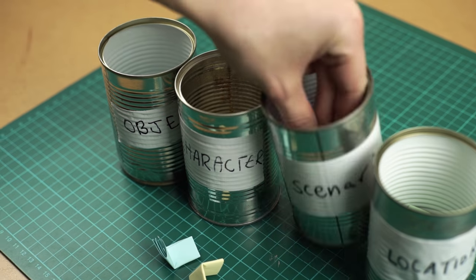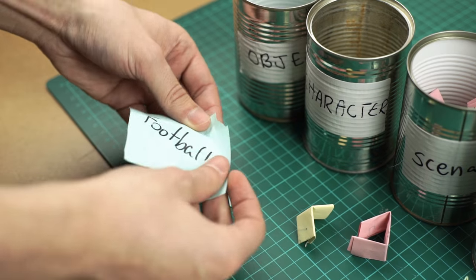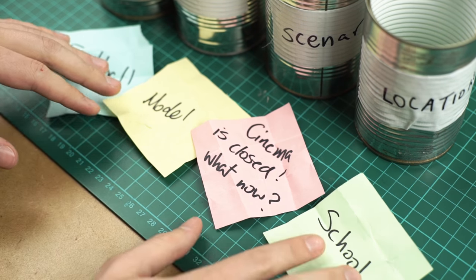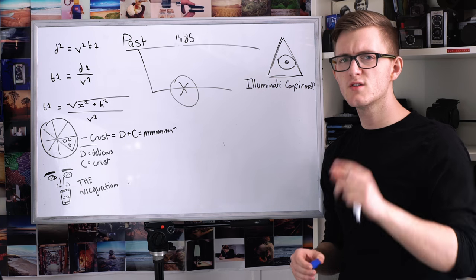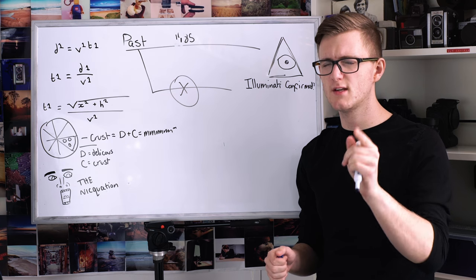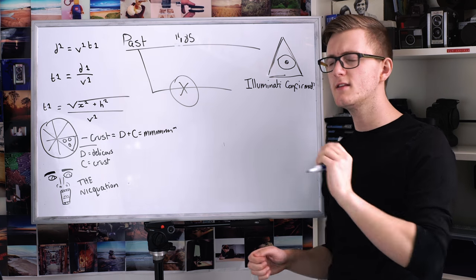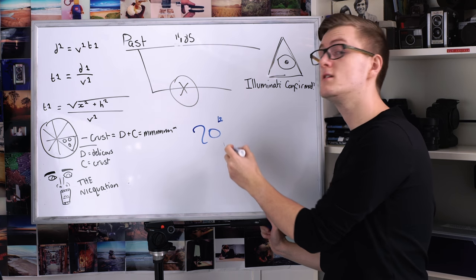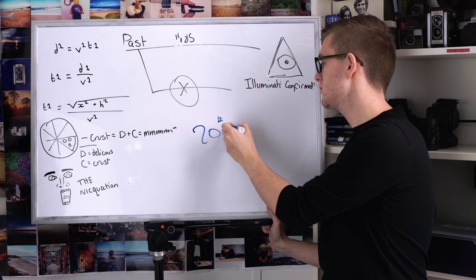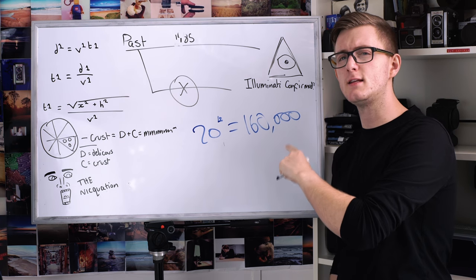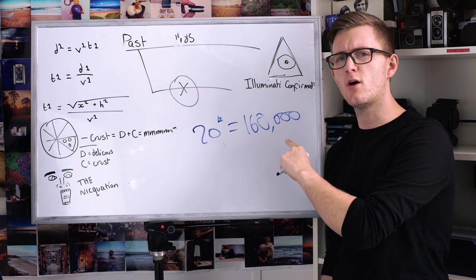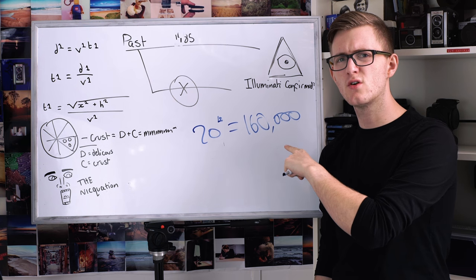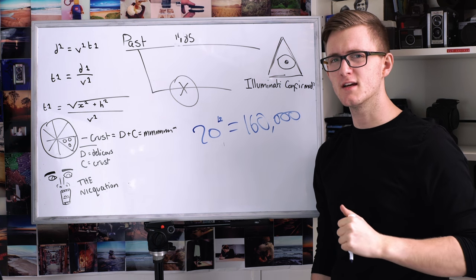Then it's a case of picking out one bit of paper from each can and creating a storyline using each category. So if every unique combination gives us a different storyline, this means that 20 to the power of 4 gives us 160,000 different combinations. We're probably wrong, so leave us a comment if you actually know the answer.